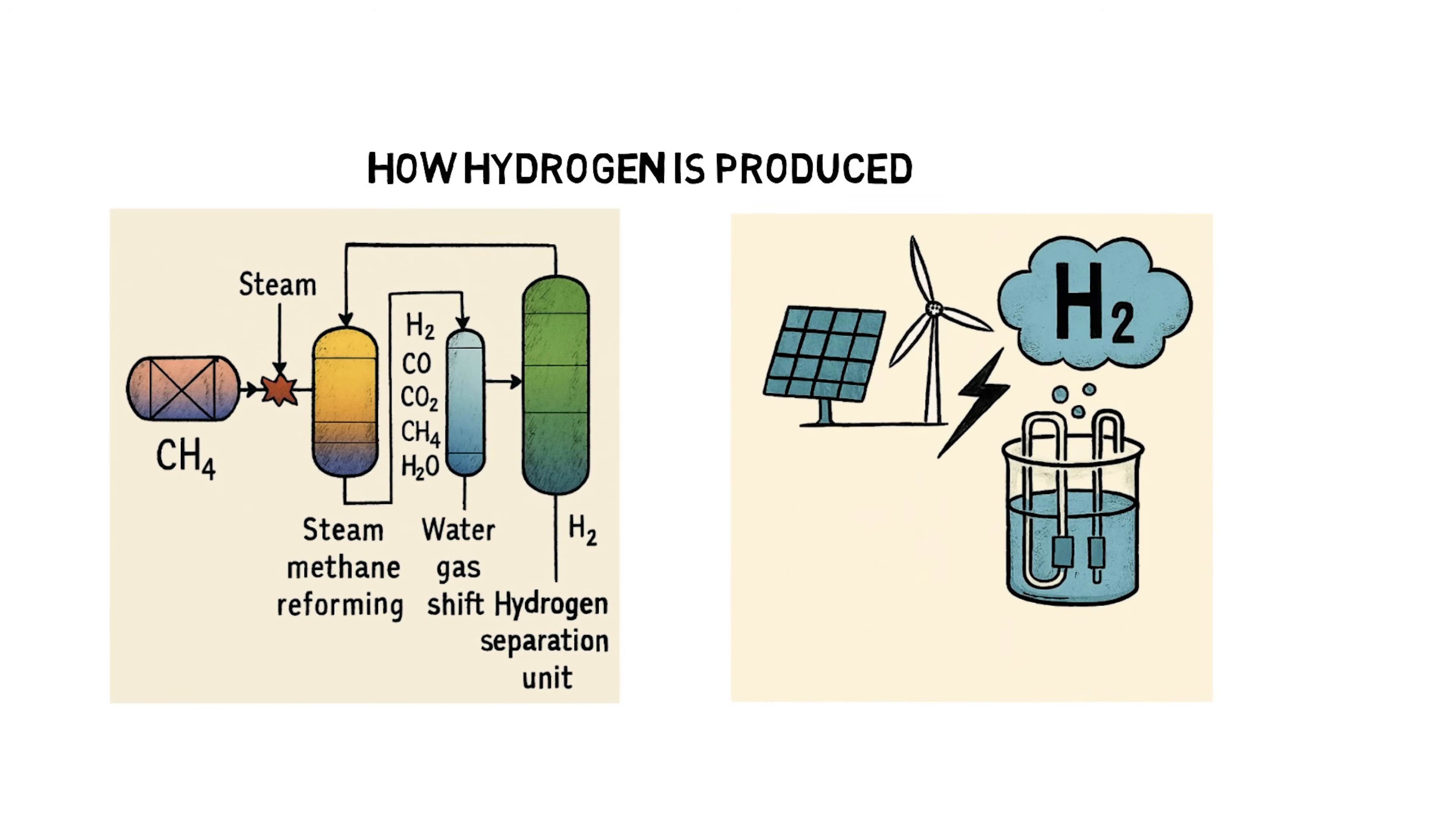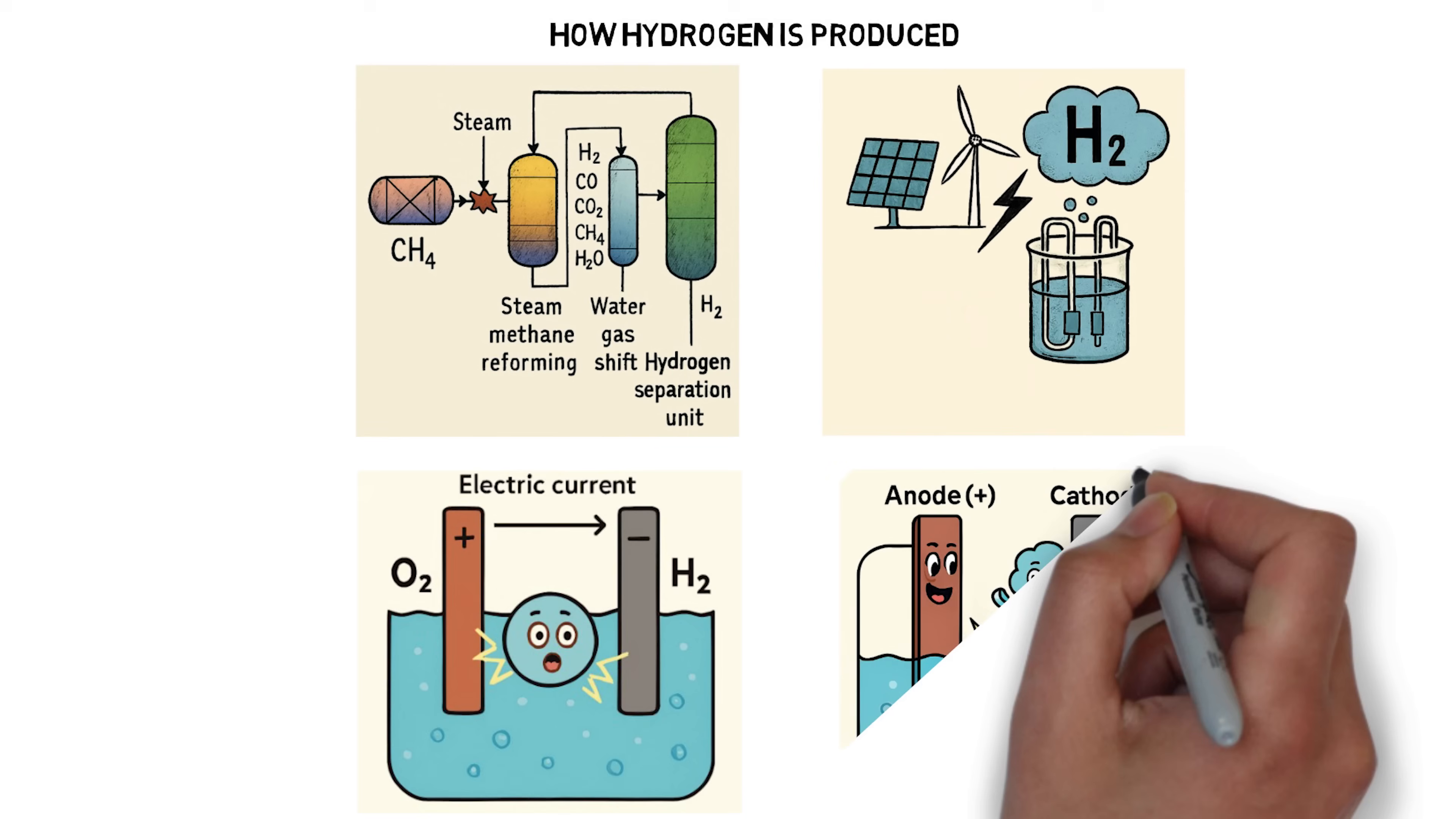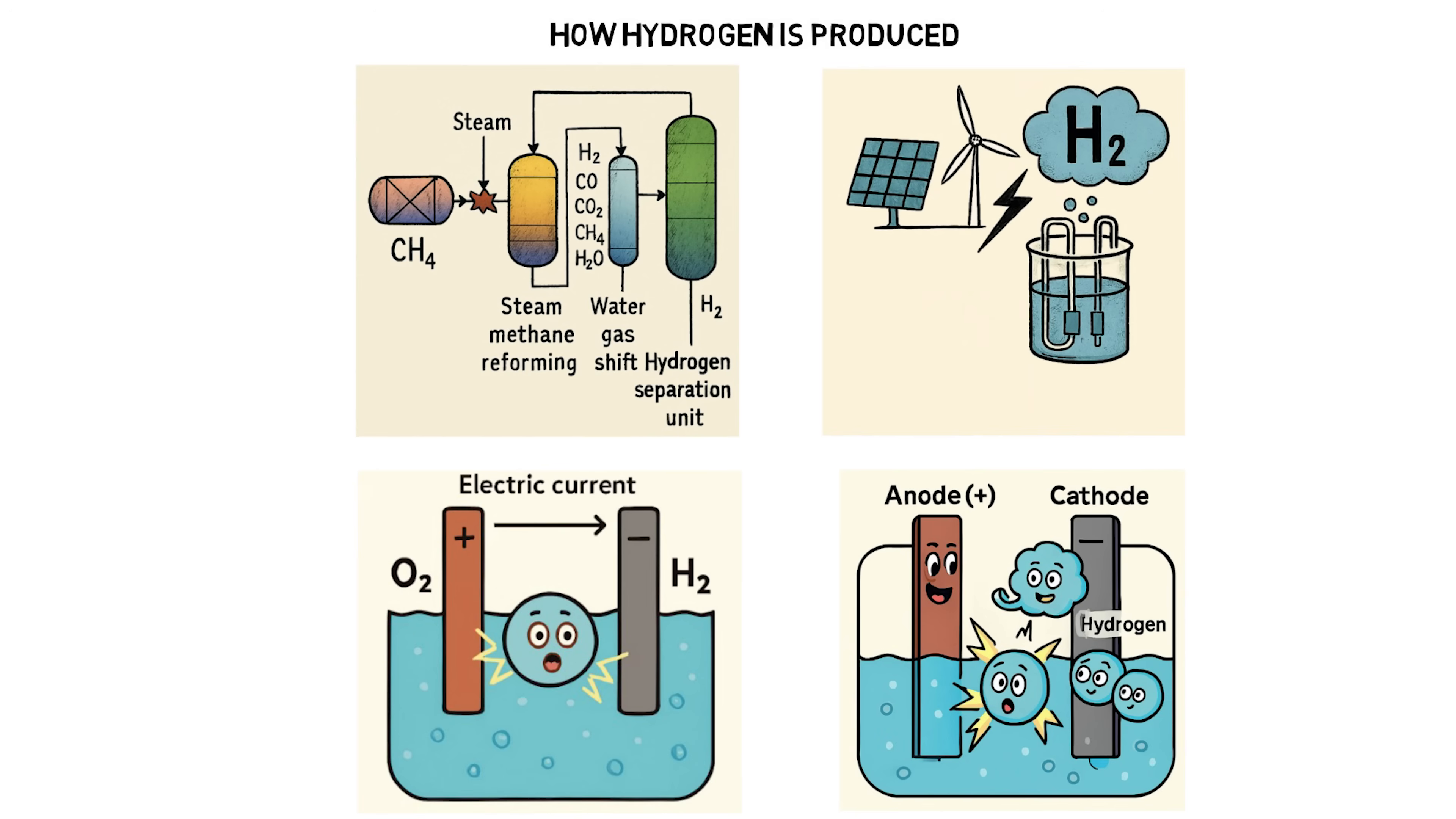Electrolysis is a chemical process where an electric current is passed through water, H2O, causing it to split into hydrogen, H2, and oxygen, O2. This occurs in an electrolyzer, which has two electrodes, the anode (positive) and the cathode (negative). Water molecules break apart, oxygen is released at the anode, and hydrogen gas collects at the cathode.